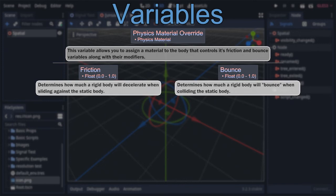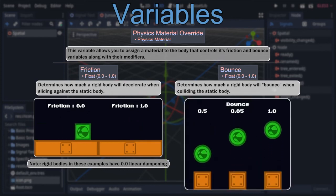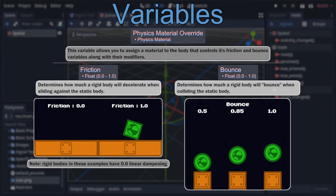Both being floats ranging from 0 to 1 that specifically affect the way rigid bodies interact with the static body. Friction of course causing said bodies to slow down while sliding against the static body, and bounce causing said bodies to rebound off the static body in amount proportional to the bounce variable and the momentum they hit the body with.